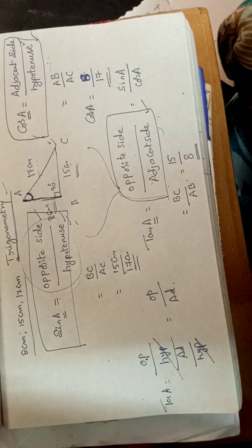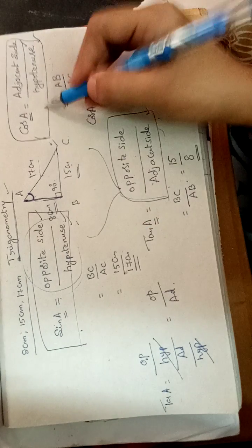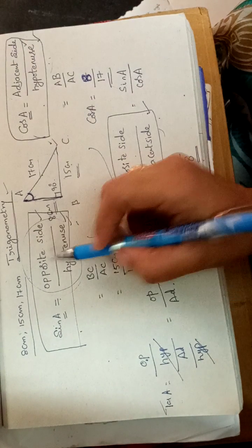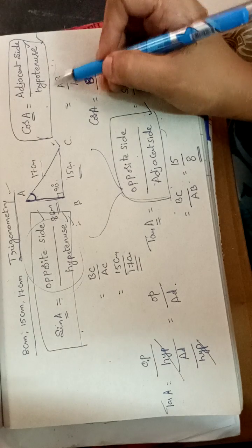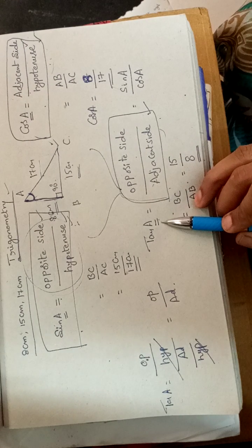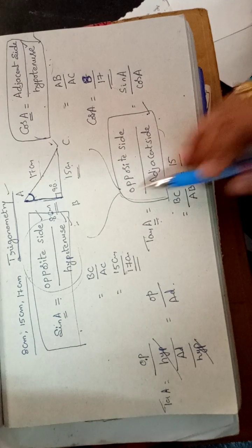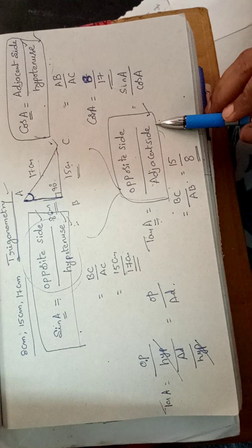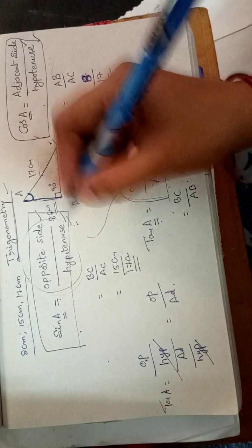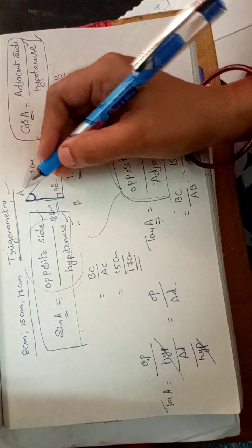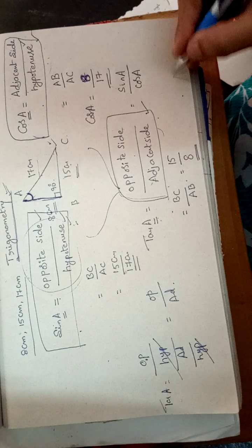These are the fundamentals in trigonometry: sin A, cos A, and tan A. For sin A, the formula is opposite side by hypotenuse. For cos A, it is adjacent side by hypotenuse. For tan A, which comes from sin A and cos A, it is opposite side by adjacent side. These are very useful formulas for future problems in trigonometry.